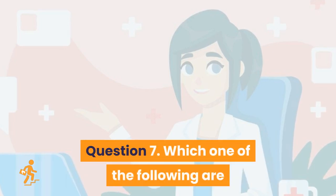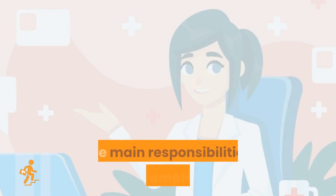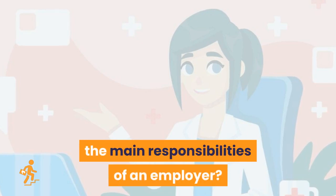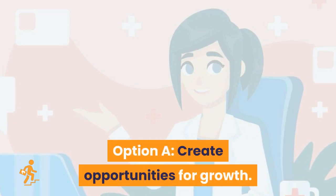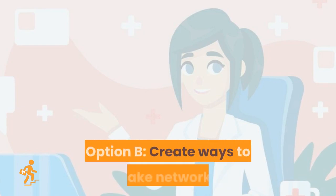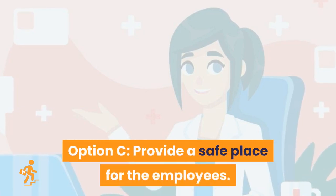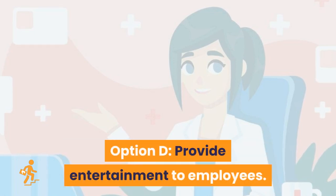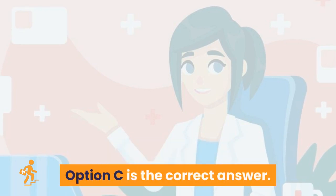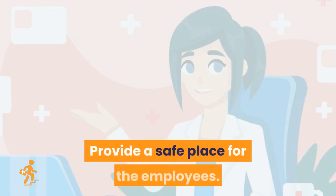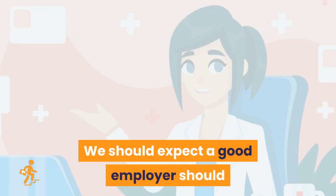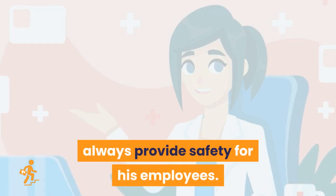Question 7. Which one of the following are the main responsibilities of an employer? Option A: Create opportunities for growth. Option B: Create ways to make networks. Option C: Provide a safe place for the employees. Option D: Provide entertainment to employees. Option C is the correct answer: Provide a safe place for the employees. A good employer should always provide safety for his employees.